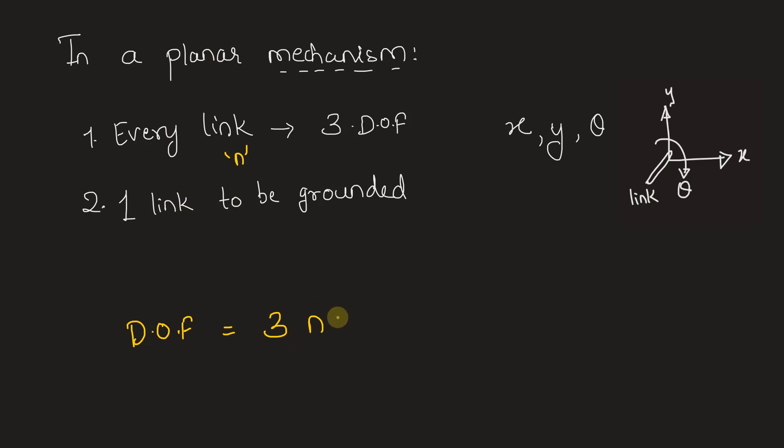So for one link, all the three degrees of freedom will be locked up and they will not be free to move. Hence we do 3 into (n-1). This is same as doing 3n minus 3.